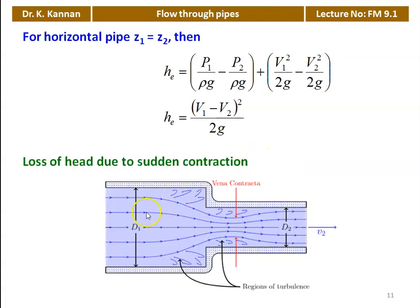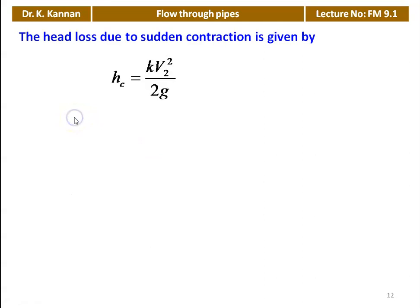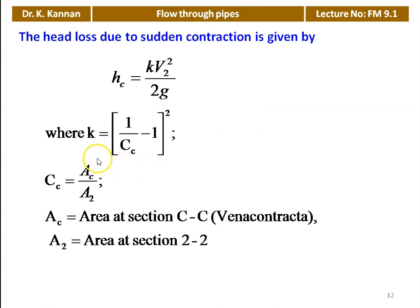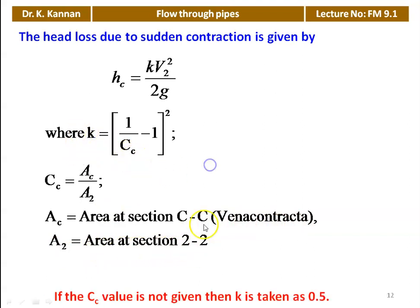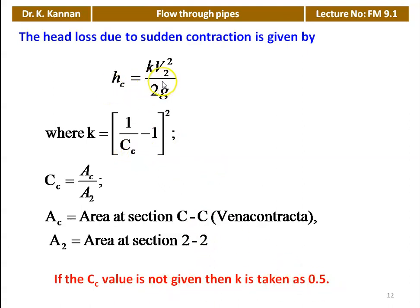Loss of head due to sudden contraction: the reverse situation — a large pipeline suddenly changes to a smaller pipeline. There is circulation in the flow, and the area with the smaller cross-section is called the vena contracta. Head loss due to sudden contraction: HC = K·V₂²/2g, where K = (1/CC − 1)², and CC = AC/A₂ (area of vena contracta divided by area of section 2-2). If CC is not given, K = 0.5, so HC = 0.5·V₂²/2g.